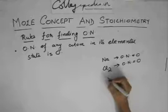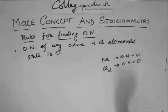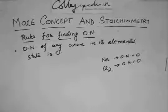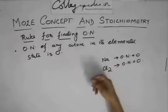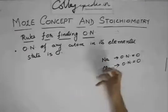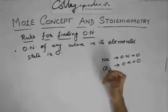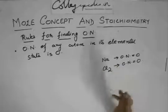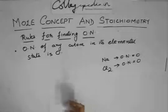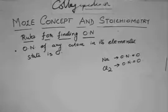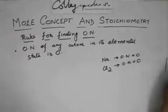Because since you have only one element, you cannot have a more electronegative or more electropositive element between them. So there is no breaking of bonds to find out how much charge is coming onto that element. This is always zero.